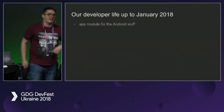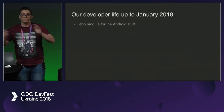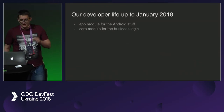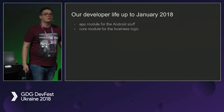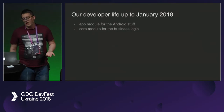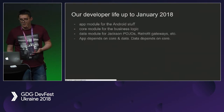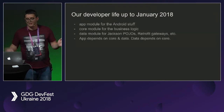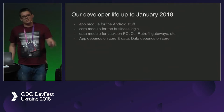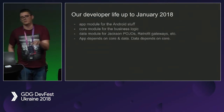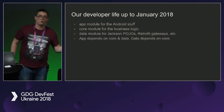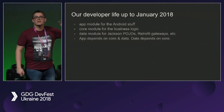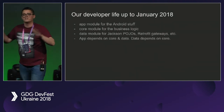We had the app module, which was basically the Android app module — all the Android SDK, intents, bundles, context everywhere. Then we had the core module, which was purely a Java module to keep the business logic. And we had the data module for Jackson POJOs, Retrofit gateways, et cetera. The structure of dependencies was: app depended on core and data, and data depended on core. Rings a bell? Somebody in the audience has a similar structure.